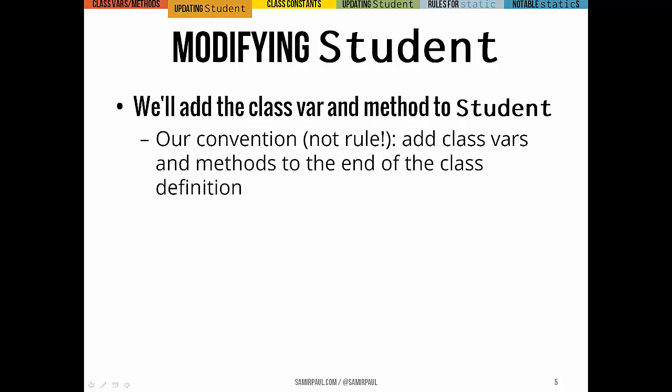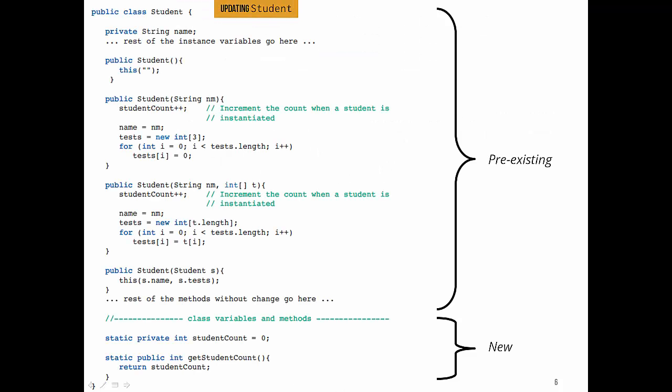We'll discuss the changes to add the class variable and class method to Student, adding them at the end of the class template by convention. Everything in the Student class looks the way we expect — all the same instance variables, constructors, and instance methods. What we add at the bottom is a static variable, studentCount, which is an int with a private visibility modifier, along with its getter. Notice how in the Student constructor, we actually increment studentCount — that static variable — which is how we get the running count of Student objects that have been created.